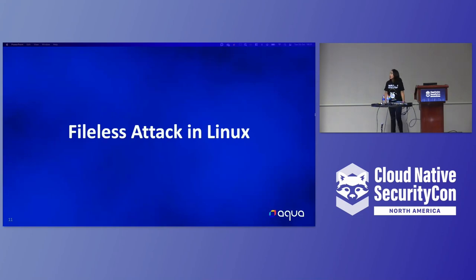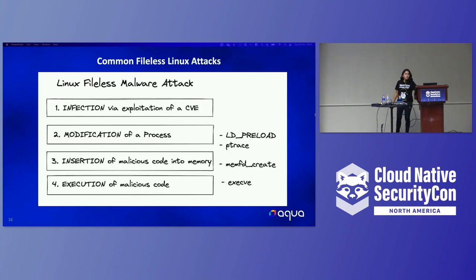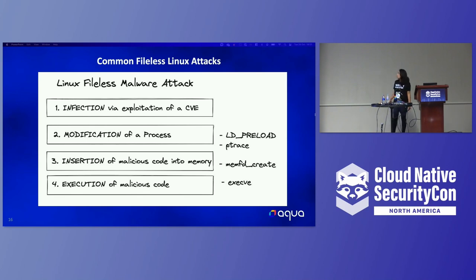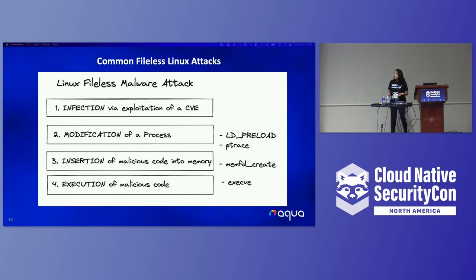Now I will explain how fileless attacks can happen in Linux, because right now our Kubernetes containers and everything is running on Linux. When we talk about fileless in Linux, it's using LD Preload, PTrace, or the memfd_create syscall, which will be the focus of my demo. These are the common artifacts that could indicate fileless activity in Linux — threat actors will try to use these legitimate Linux programs to load and execute some malicious code.